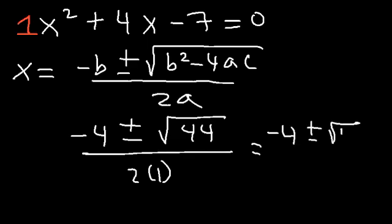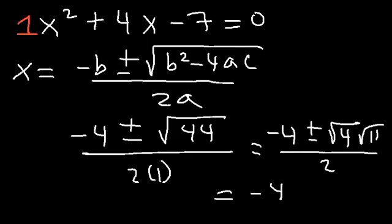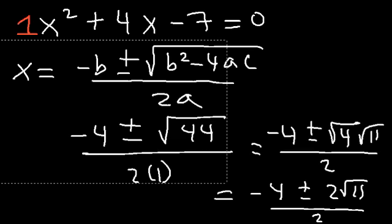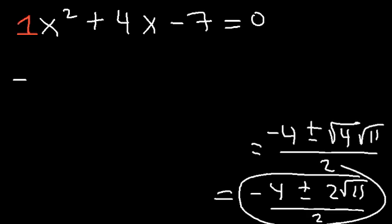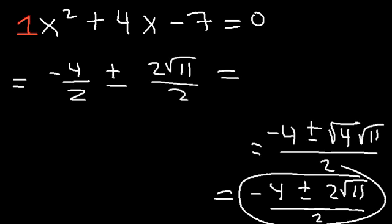Radical 44 is the same as the square root of 4 times the square root of 11. The square root of 4 is equal to 2, so we have 2 root 11, divided by 2. We can separate this fraction into two smaller fractions: negative 4 divided by 2, plus or minus 2 radical 11 over 2, which simplifies to negative 2 plus or minus root 11.